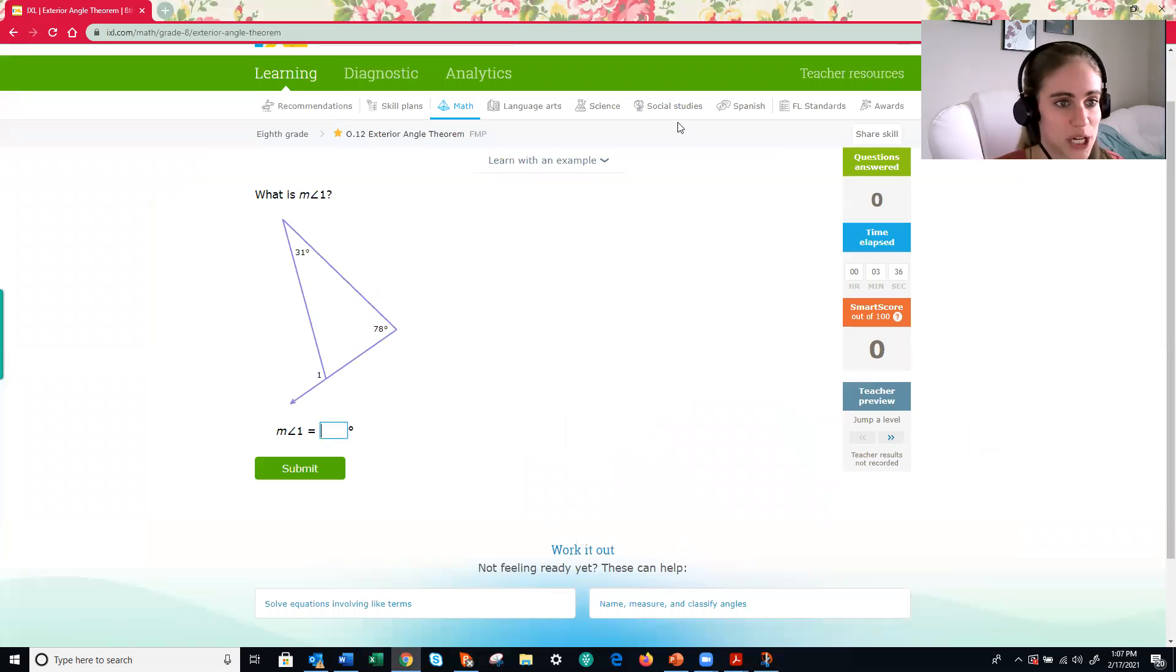All right, here we go. First thing I want to mention about this IXL assignment is that, and I wish IXL didn't do this, but they do. Notice that it's labeling it as the measure of angle one. And if we look right here, we have a one. That is the angle it's referring to. There is no degree symbol. So it's not that it's one degree, it's that it's angle number one.